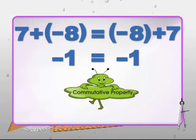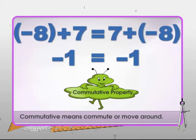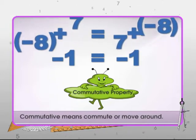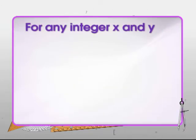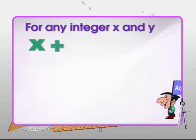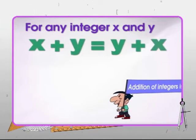The commutative property means we can say that in general, for any two integers x and y, x plus y is equal to y plus x.